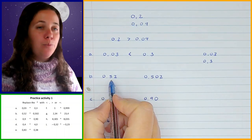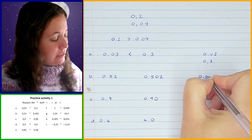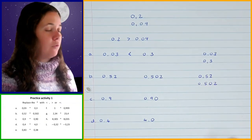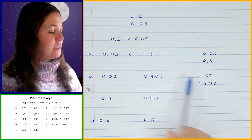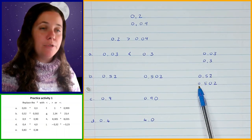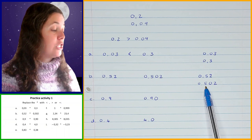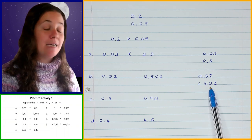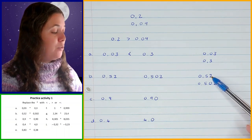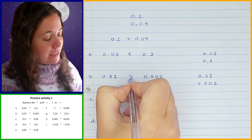Next one: 0.52 and 0.502. I'm going to write them underneath each other — 0.52 and 0.502. When I compare those, moving from left to right, my ones are both zero, my tenths are both five. So now they both have the same value so far. So now I need to go on and compare my hundredths. The 2 is greater than 0, which means that 0.52 is greater than 0.502.